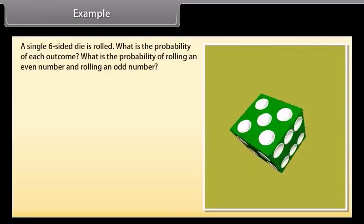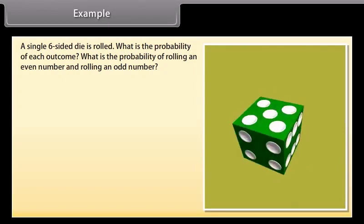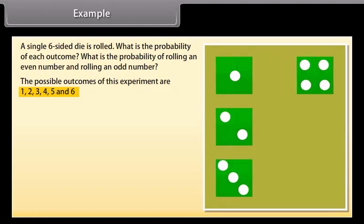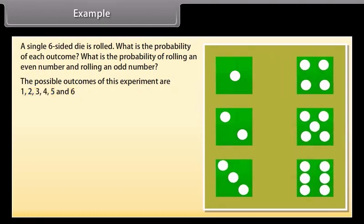A single six-sided dice is rolled. What is the probability of each outcome? What is the probability of rolling an even number and rolling an odd number? The possible outcomes of this experiment are 1, 2, 3, 4, 5, and 6. Now let's find probabilities.